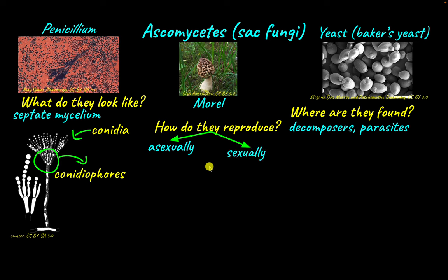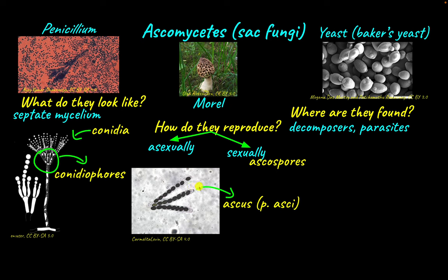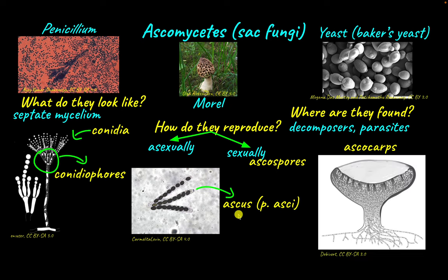Sexual reproduction in Ascomycetes occurs through the formation of ascospores. Ascospores are arranged in structures called asci — plural asci, singular ascus. The asci are sac-like structures within which the ascospores are arranged, which is why Ascomycetes are also called sac fungi. Together, the ascospores and asci are arranged inside a bigger structure called ascocarp, which is the fruiting body for Ascomycetes — the structure from which spores are spread and germinate.